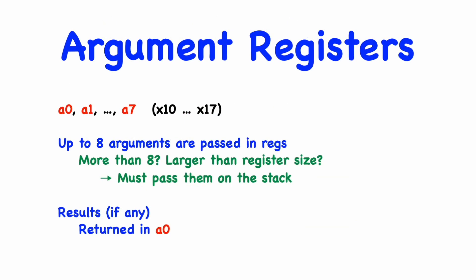In order to pass arguments to functions, there are, by convention, eight registers that are dedicated to that, and these have alternate names of A0 through A7. So, whenever we have a function that has eight or fewer arguments, these can be passed directly in registers. If the function takes more than eight arguments, or some of the arguments are larger than the size of the registers, then you're going to have to pass them on the stack somehow. But most functions can get by with just these eight argument registers. If the function returns a result, then, by convention, it would be returned in register A0.